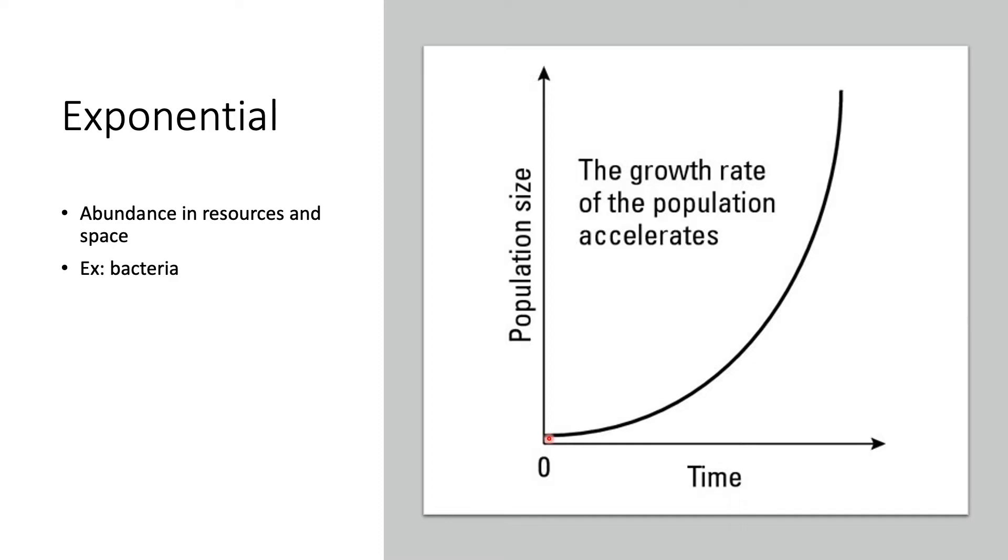As any of us know from math, this is an exponential curve and the growth rate in this curve is accelerating exponentially. Essentially what this tells us is that we have an abundance in resources and space, so the population is able to grow almost without limit. It just keeps growing because it's so abundant.